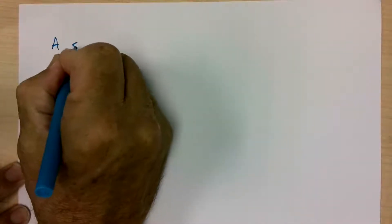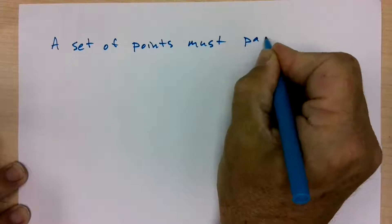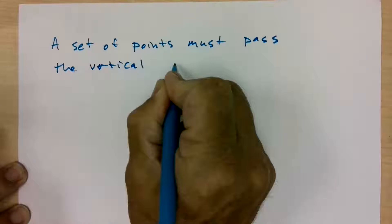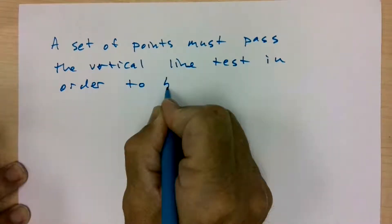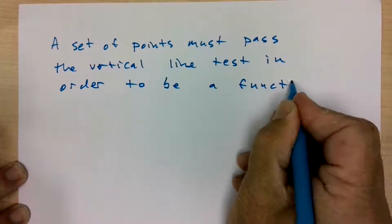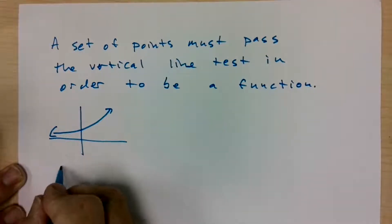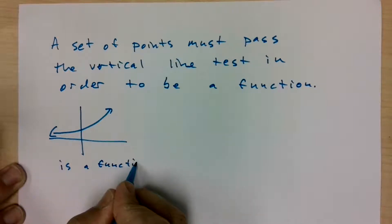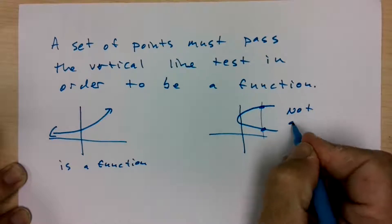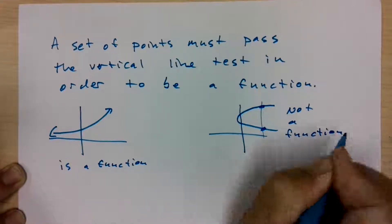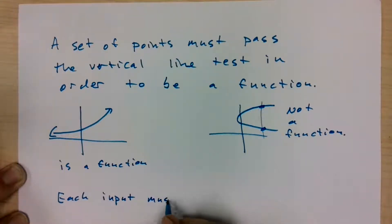A set of points must pass the vertical line test in order to be a function. We can look at a couple of examples. Any vertical line that hits a curve in at most one point means it is a function. If the vertical line cuts a curve in two points, this is not a function. Each input must have only one output.